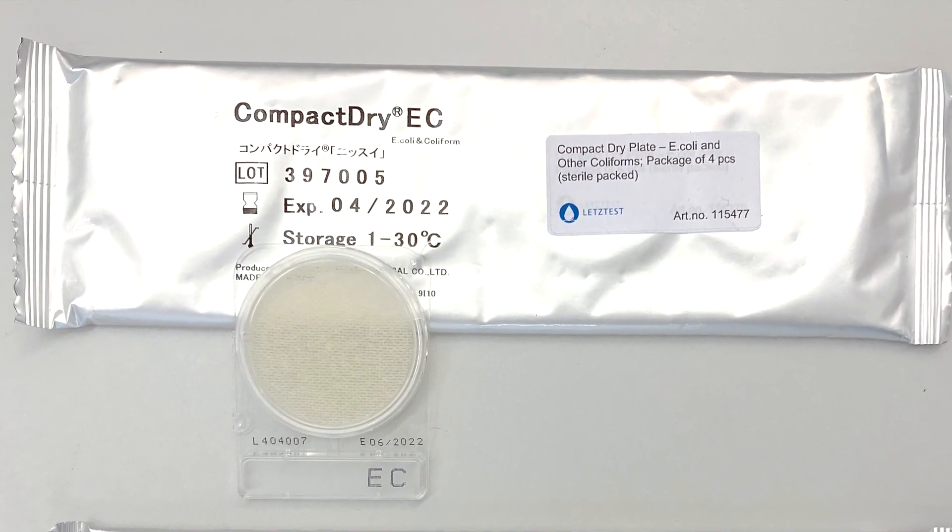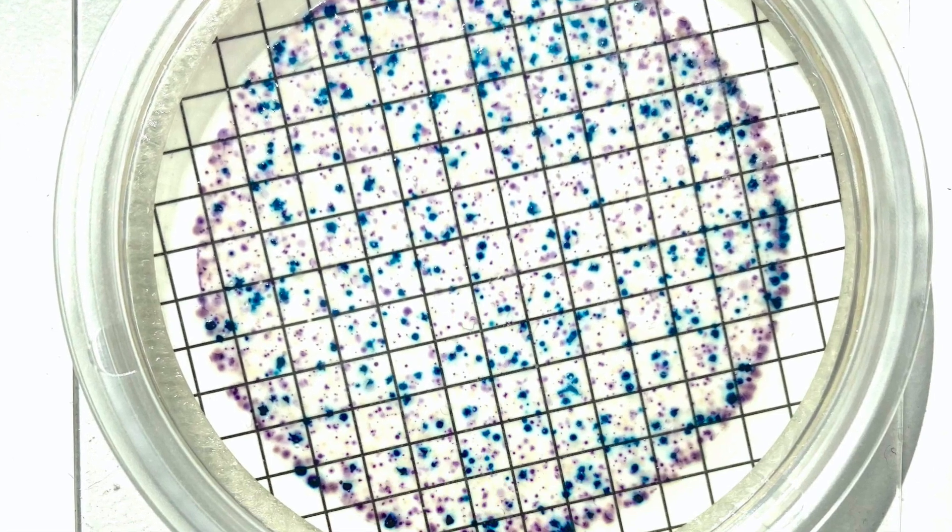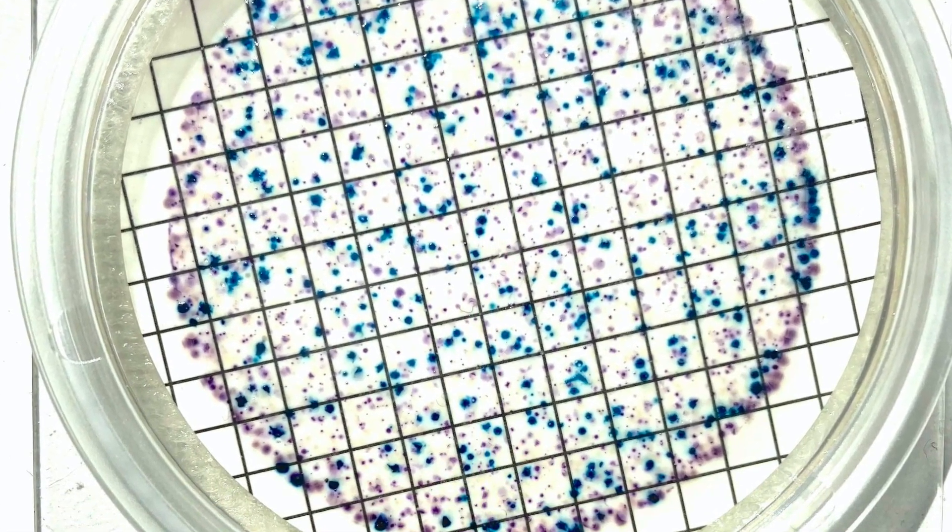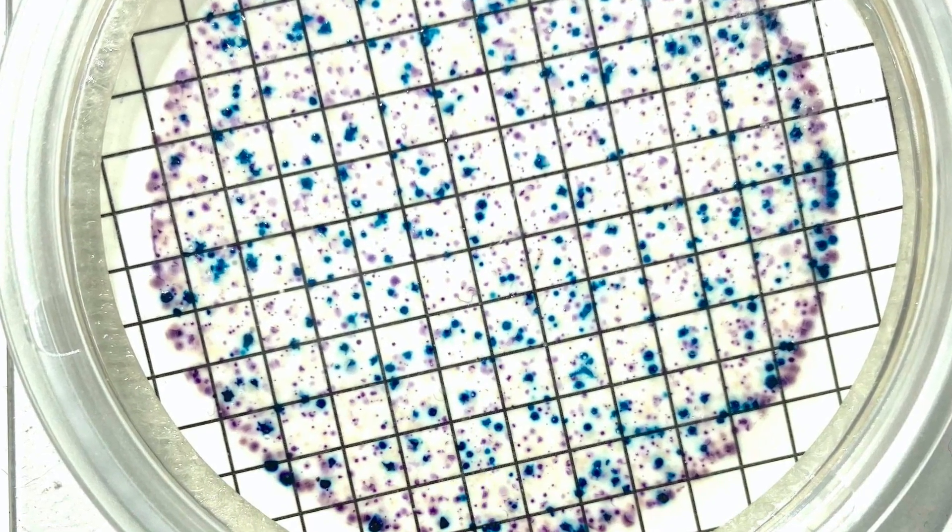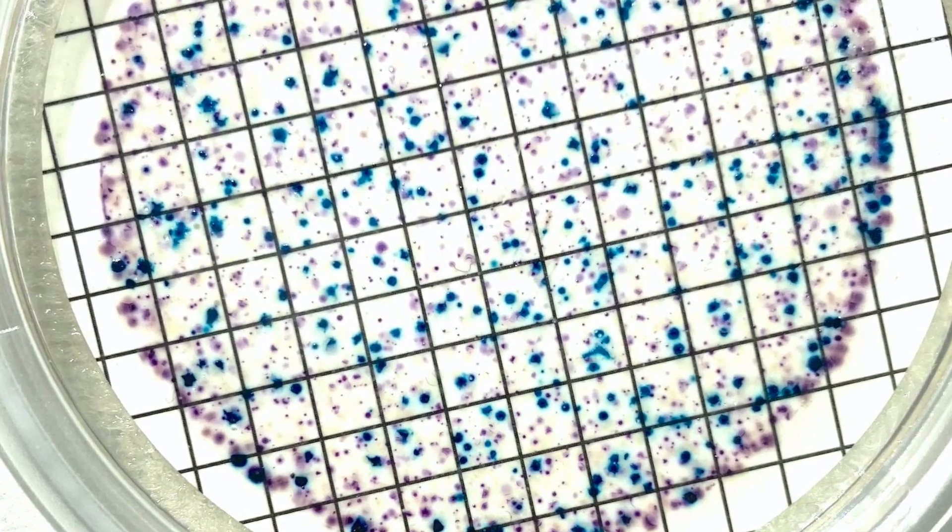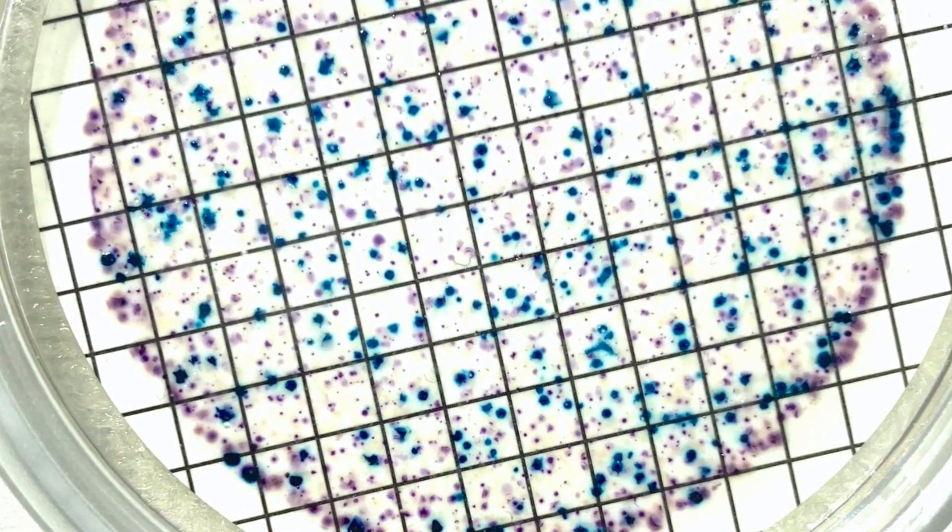If you have used the EC plate, then you will also see some pink colonies of so-called other coliform bacteria. These can be of fecal origin but can also come from the environment, especially in tropical regions. They are therefore not an accurate indicator.